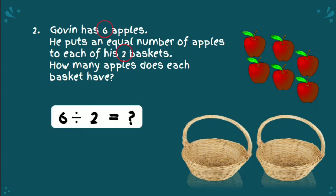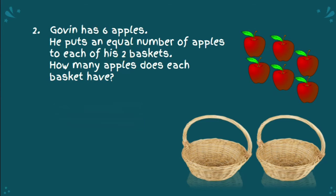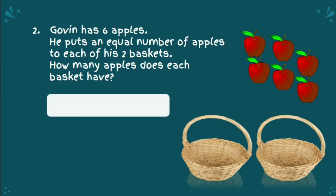But what is the answer? Again, we are going to use repeated subtraction to find the answer. We subtract 2 from 6 until we get 0. 6 minus 2 is equal to 4. 4 minus 2 is equal to 2.